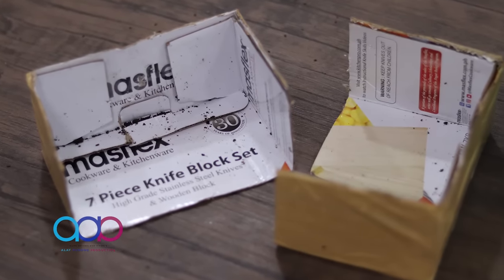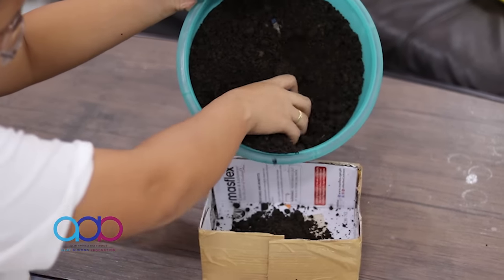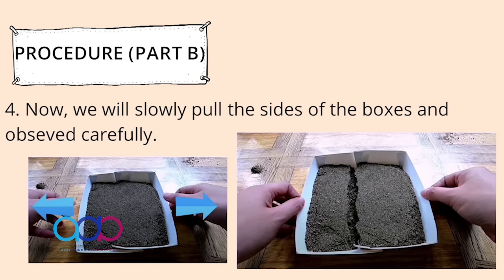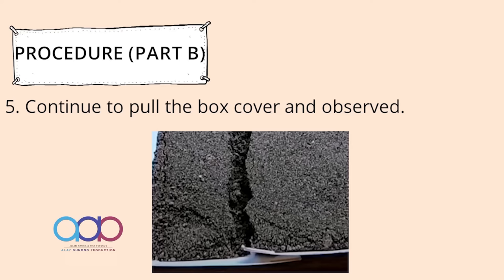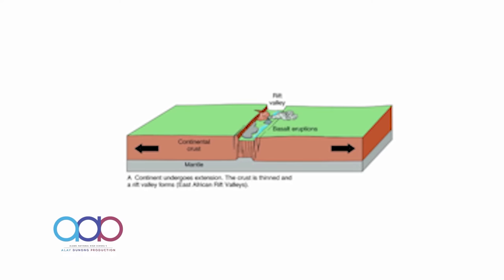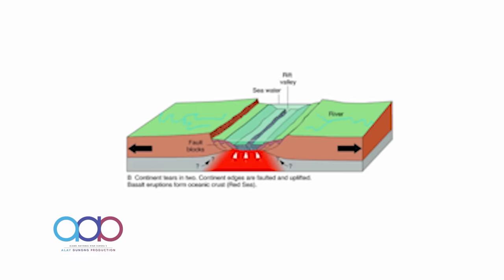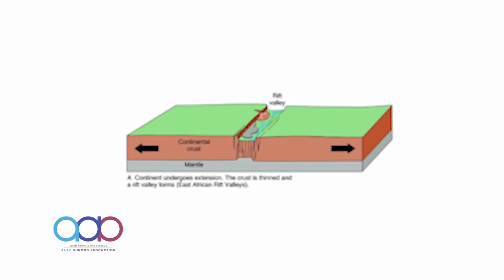Get a box and cut it in the middle. Place one box on the other one. Put sand in the nested boxes. Shake the box side to side so that the surface of the sand will become level. Now we will slowly pull the sides of the boxes and observe. We can see that two parallel cracks form in the sand. Continue to pull the box cover and observe. The sand in the middle of the cracks subsides or moves down, forming a depression. This simulates what happens when the ground is pulled apart by forces within the Earth. The fault is formed — a portion of the land sinks and a valley is formed.